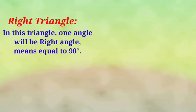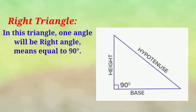Next triangle is Right Triangle or else you can say Right Angle Triangle. In this triangle one angle will be Right Angle means equal to 90 degrees. This is very important triangle. In this chapter you will get two theorems based on this triangle. For that you should know the parts of this triangle.